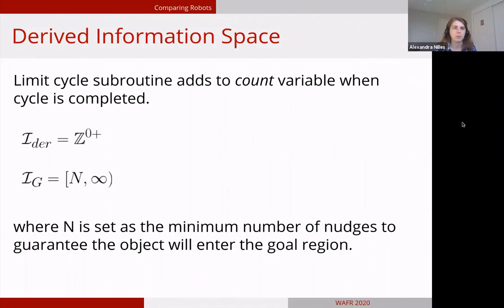Our derived information space actually ends up being really simple. I talked about how we have this count variable for the limit cycle subroutine. To skip a lot of formalisms, we're using that as our derived information space. We use all the positive integers and we just want to guarantee that we've successfully completed a limit cycle more than N times, assuming that it just takes N nudges or collisions to push the object into the goal region. So we just want to guarantee that we can cycle around N times. And it doesn't matter, since all of our robots have the limit cycle subroutine in common, we can compare them directly.